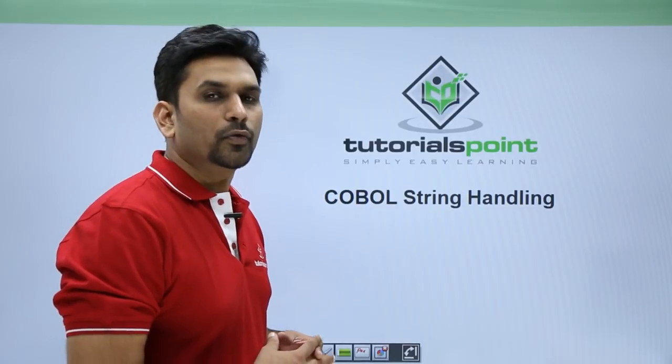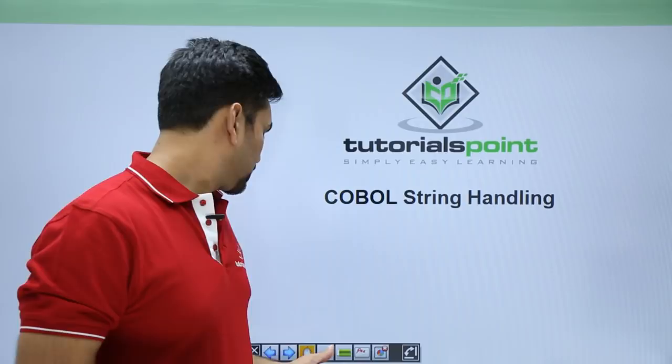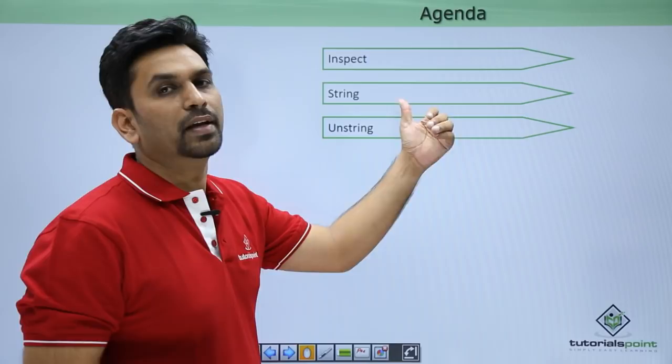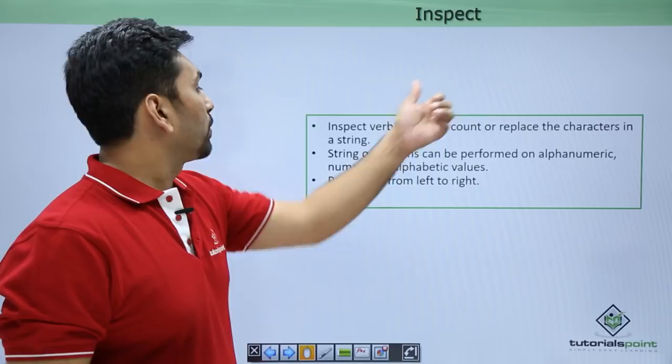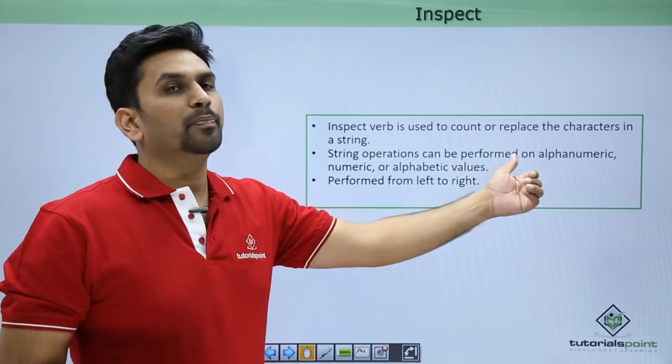Hello friends, welcome to Tutorials Point. In this video we will learn COBOL string handling. The agenda is: we will first learn about INSPECT, then STRING, and then UNSTRING. The INSPECT verb is used to count or replace the characters in a string. String operations can be performed on alphanumeric, numeric, or alphabetic characters.